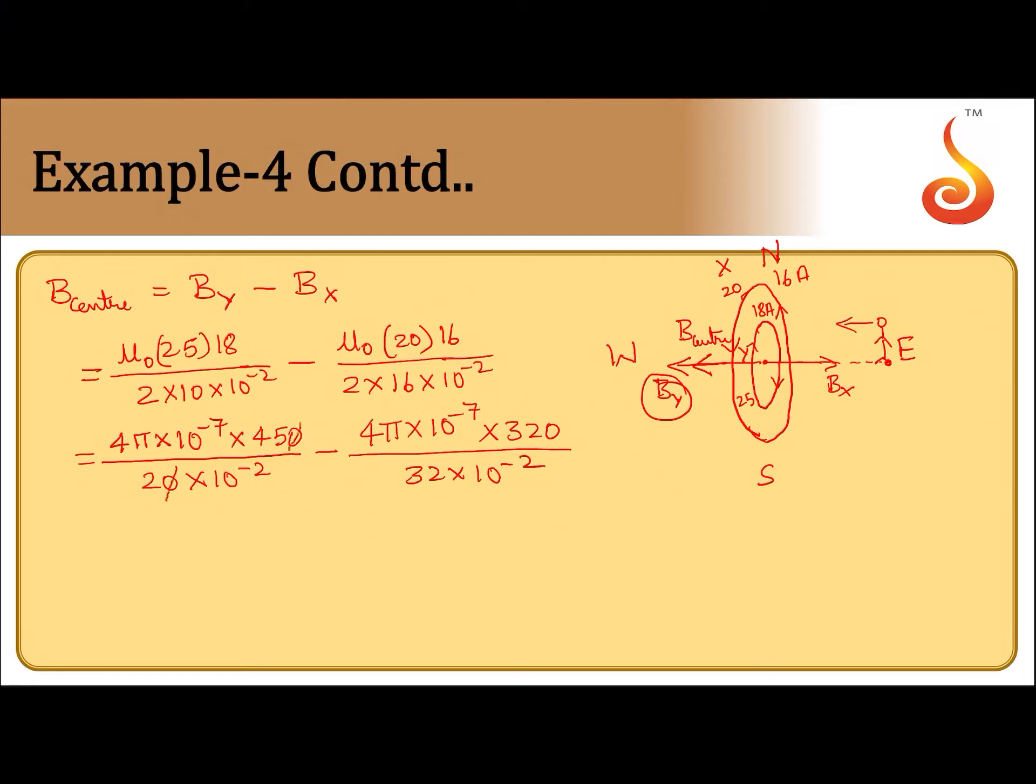Now simplify this. So this 0, this 0 can be cancelled. 2, 1, 2, 2, 45 into 2 is 90, 90 pi into 10 to the power minus 5, minus this will be 40 pi into 10 to the power minus 5. So 90 minus 40 pi is 50 pi into 10 to the power minus 5, or it will be 5 pi into 10 to the power minus 4 tesla.